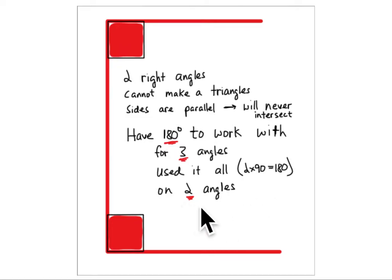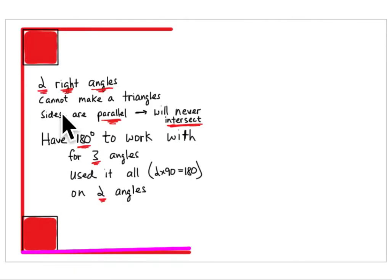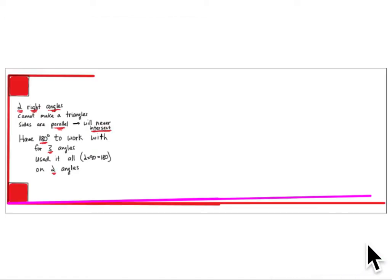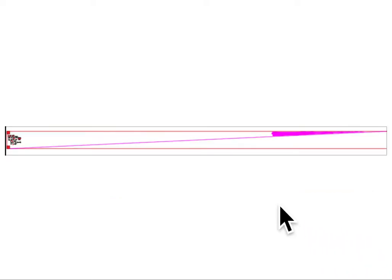What if you had a 90-degree angle and an 89-degree angle — almost 90 degrees, just one degree less? They will intersect, but you have to go very far out because the remaining angle is very small. As the sides extend further and further, they eventually meet, and that third angle down at the bottom will be just one degree — 89 degrees, 90 degrees, and 1 degree.